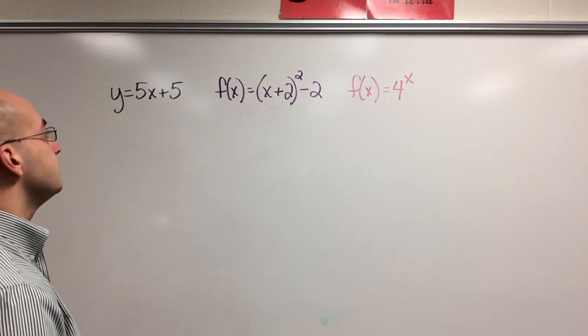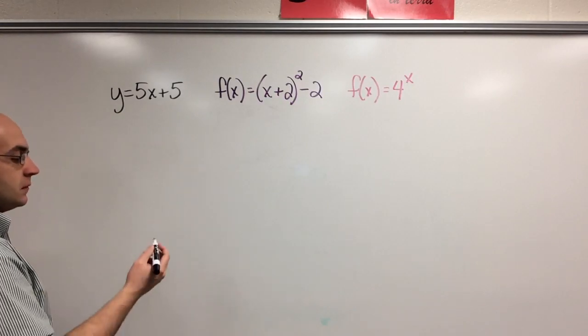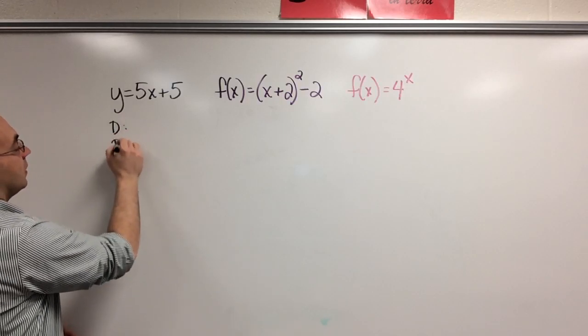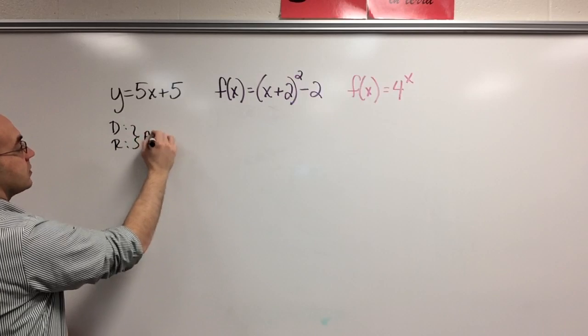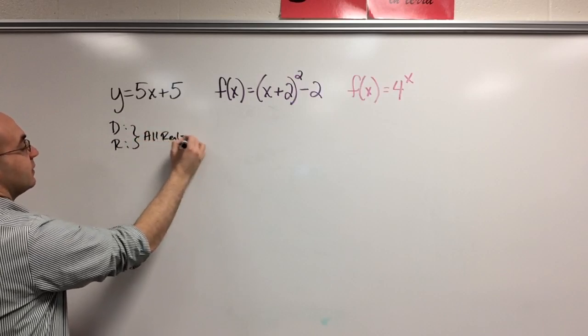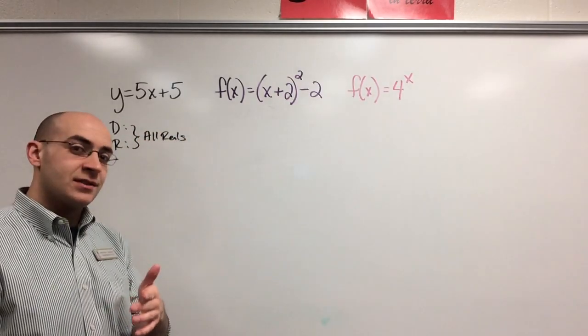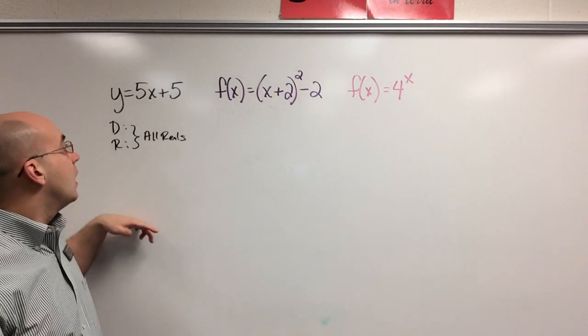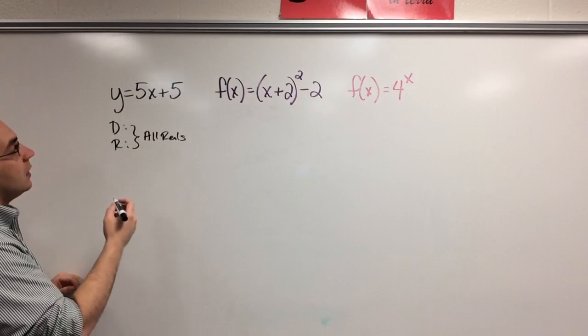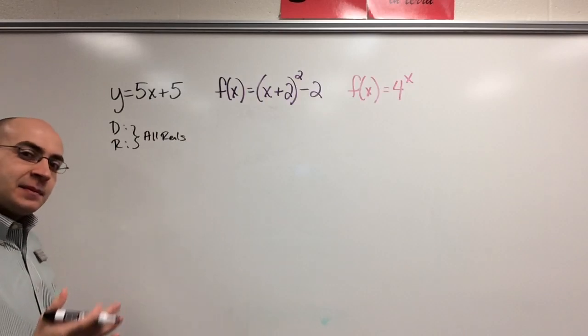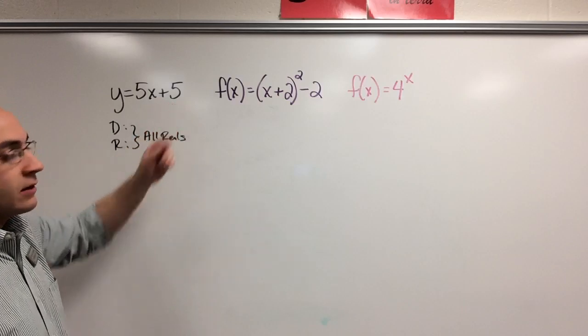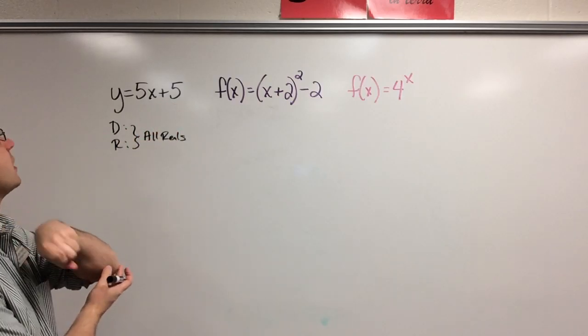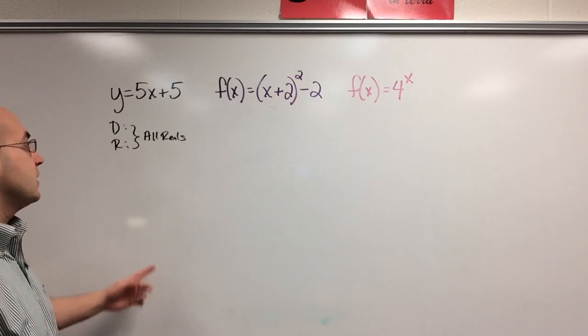For the linear, domain and range for this function are both the same. Domain and range are both all reals, and you're going to hear me say that a little bit more often now because it's easier than saying negative infinity to positive infinity. That's what all reals means. So x-intercept, y-intercept, I'm not going to go over so much. Clearly the y-intercept is 5 and the x-intercept is negative 1.